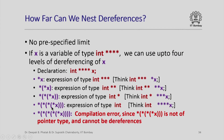How far can we nest dereferences? As far as you want. For example, if x is a variable of type int star star star star, we can use up to four levels of dereferencing. Star x is of type int star star star; star star x is of type int star star; and so on, until star star star star x is of type int. If we try to dereference star star star star x — an integer, not a pointer — the compiler will report an error.